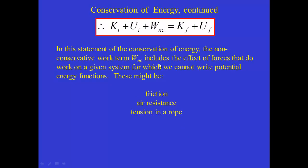The non-conservative work term includes the effect of forces that do work we can't write potential energy functions for. Friction has already been mentioned; air resistance is a similar frictional-type force. Another example is tension in a rope — if a rope pulls an object, we can't write a potential energy function for that force, so we calculate the work done by these forces separately and plug them into the equation.